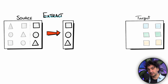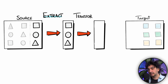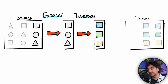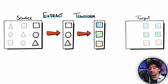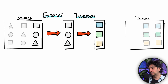Moving on to step two — we take the extracted data and perform manipulations and transformations, changing the shape of the data. This process is heavy work. We can do data cleansing, data integration, formatting, and data normalization. This is the Transform step: we take the original data and reshape it into exactly the format we need for analysis and reporting.